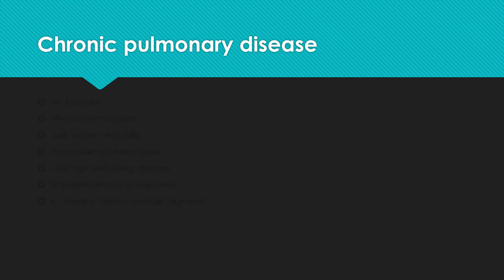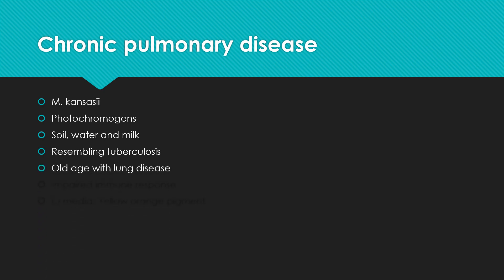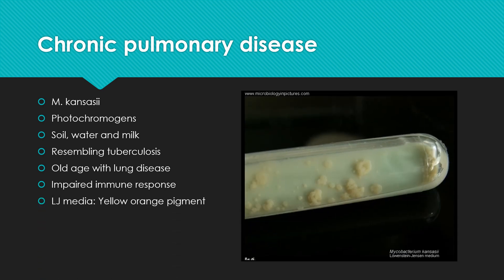Chronic pulmonary disease can be caused by Mycobacterium kansasii. This Mycobacterium kansasii is a photochromogen. The source of infection is from soil, water, and milk. This chronic pulmonary disease resembles tuberculosis. Old persons with pre-existing lung disease or impaired immune response are more prone to this infection. The organism grows well at 37 degrees Celsius on LJ media, where it produces a yellow-orange pigment, as seen in the picture.